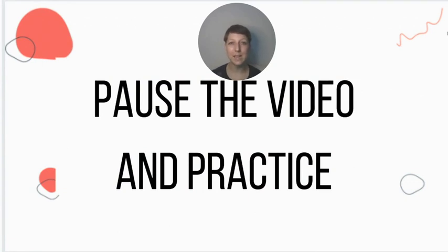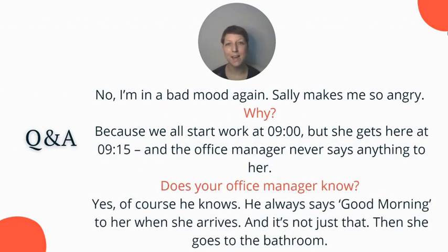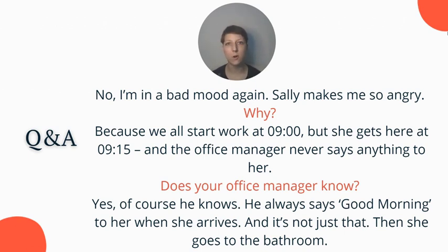Pause the video now and see if you can answer: what questions go in each blank? Here are some hints: 'How long does she spend in the bathroom?', 'What does she do after that?', 'Why does she make you angry?', 'Does the manager know she arrives late?' Now match them to the right slots. The first blank is 'Why?' because 'because' is always an answer for 'why.' The next blank is 'Does your office manager know?' — yes is the answer, so a do/does question makes sense.